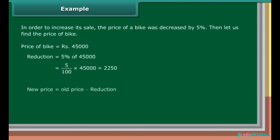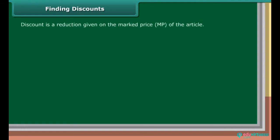New price is equal to old price minus reduction, which is equal to Rs. 45,000 minus Rs. 2,250, which is equal to Rs. 42,750. Finding discounts: Discount is a reduction given on the market price (MP) of the article. Discount is equal to market price minus sale price.